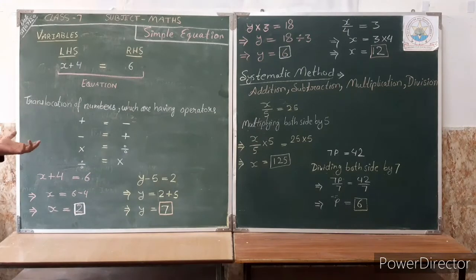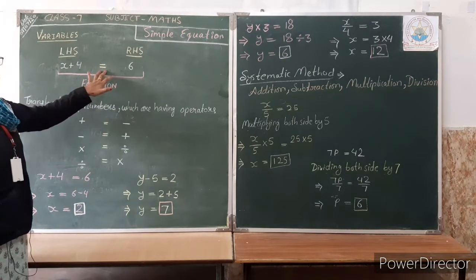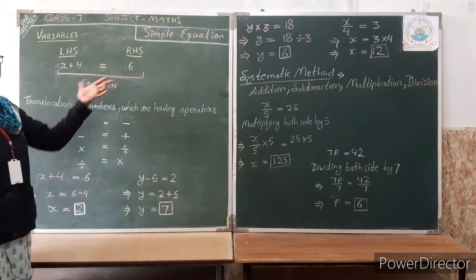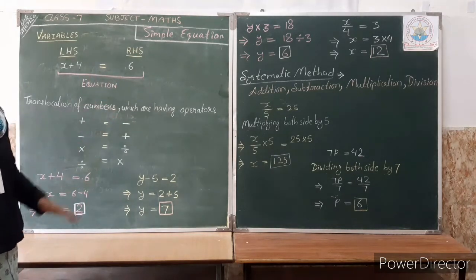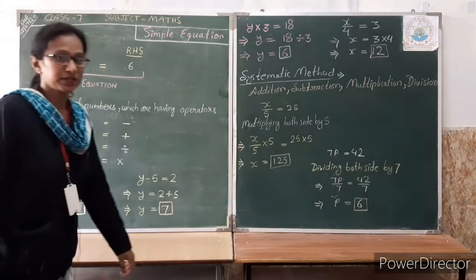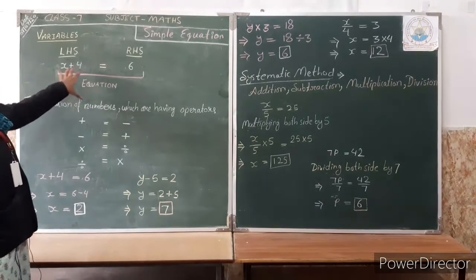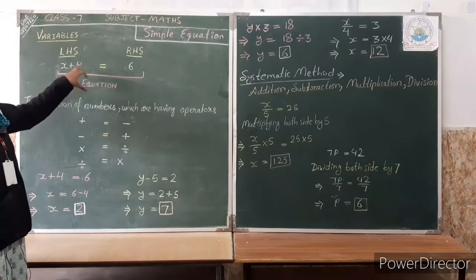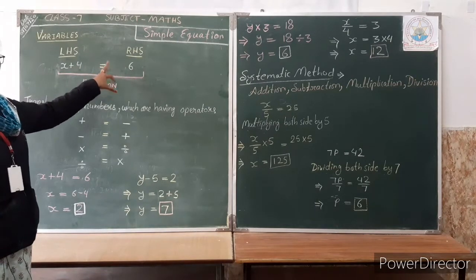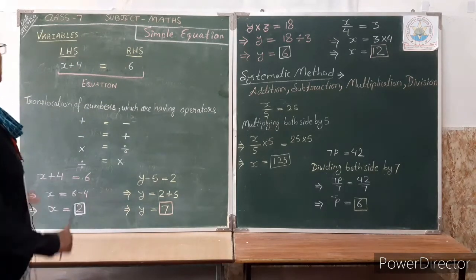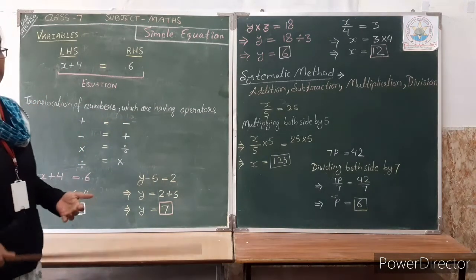Variable, plus numbers, plus an equal sign — when these come together as a group, we call it an equation. An equation is an expression which contains variables, numbers, operators, and an equal sign. The equal sign is what makes this an equation. In this chapter, we will learn how to solve such equations.